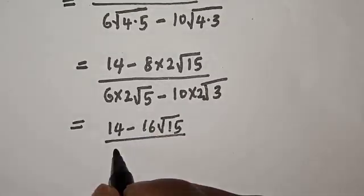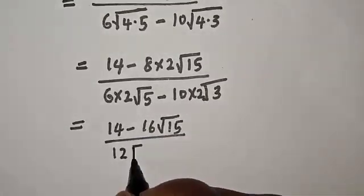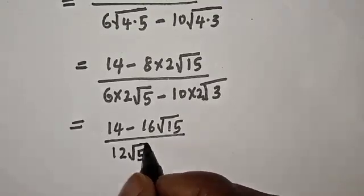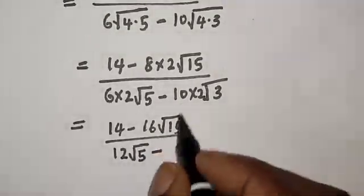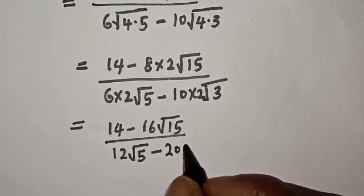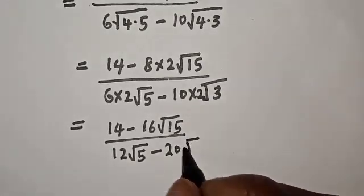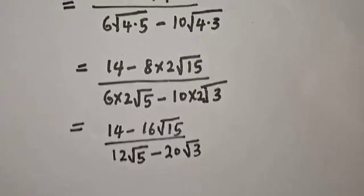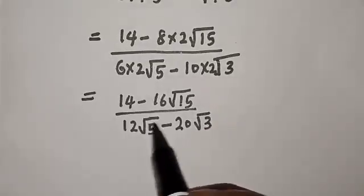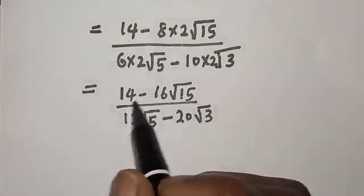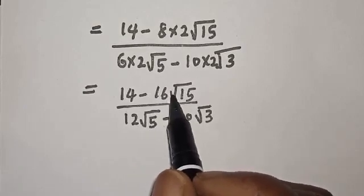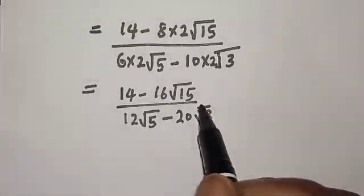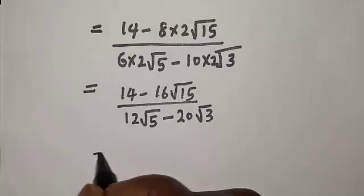This is equal to 14 minus 8 times 2, which is 16 root 15, divided by 6 times 2, which is 12 root 5, minus 10 times 2, which is 20 root 3. From here we can rationalize by multiplying both the numerator and denominator by the conjugate of the denominator.